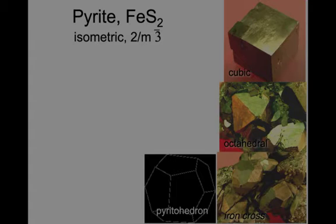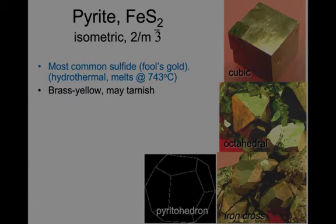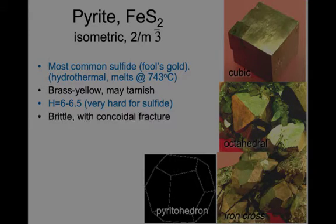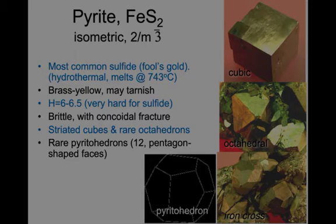Here is pyrite, FeS₂. It forms isometric crystals and is the most common sulfide, also called fool's gold because it has the same sort of gold-yellow color. It melts at 743°C, so it's largely formed in hydrothermal veins. It's brass yellow and may tarnish to black. Hardness is 6 to 6.5, which is very hard for a sulfide. It has a brittle conchoidal fracture. It typically forms striated cubes, as in the upper right, and octahedra as in the middle right, and more rarely pyritohedrons — the pentagonal-shaped ones below. It may also form an iron cross penetration twin.